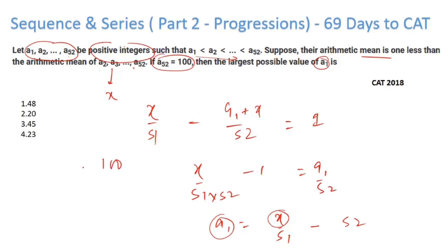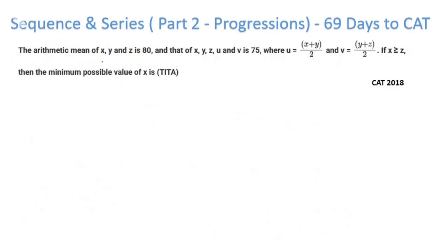So a₅₂ is 100. The maximum sum I can create here, knowing these are positive integers in increasing order, the best I can do is take 52 numbers from 100 in reducing order: 100, 99, going on till 50. There are 51 numbers here. So 51/2, sum will be 150, this becomes 75.